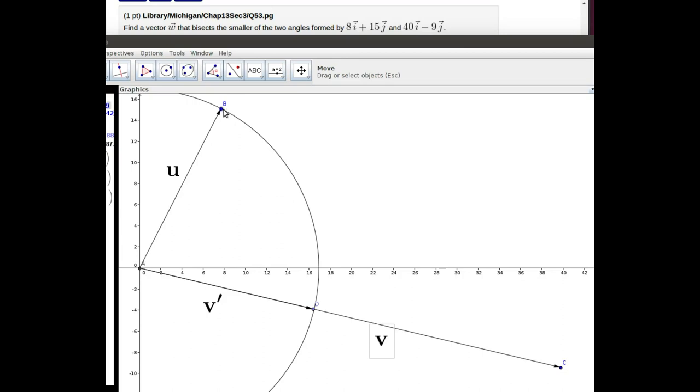Then if I added those two vectors together, think of the parallelogram law, the sum of those two vectors would be the angle bisector between these two. So the question is how to find that v prime.